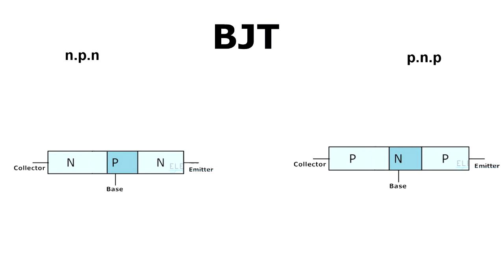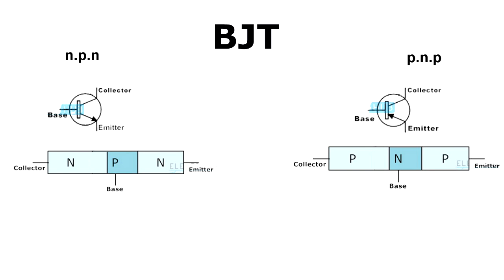There are three terminals connected to each region, each one named the same as the region it's connected to. The same applies to the PNP transistor: the smallest region is called the base, the largest region is called the collector, and the last one is called the emitter. The most used transistor is the NPN because the mobility of electrons is greater than the mobility of holes. Each electrical component has a symbol used to represent it on paper quickly and easily, and here is the symbol of the transistor.